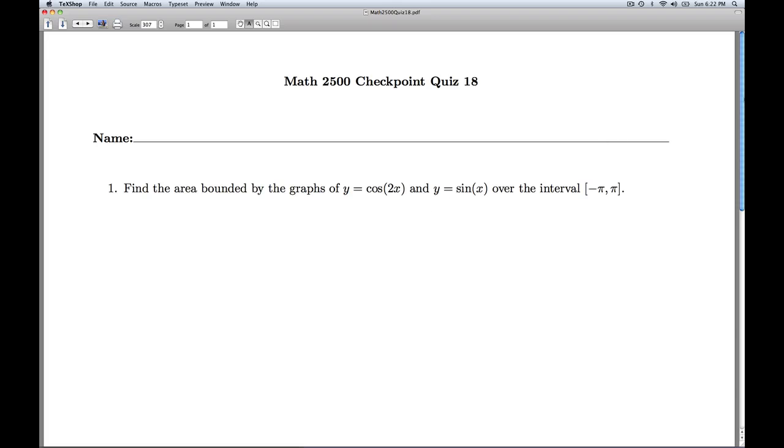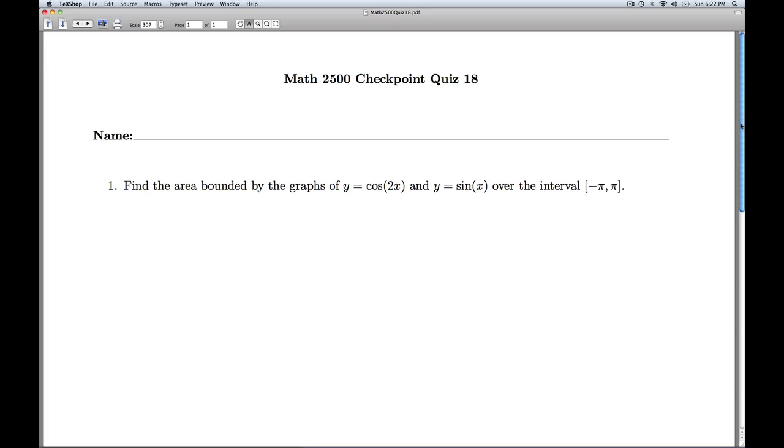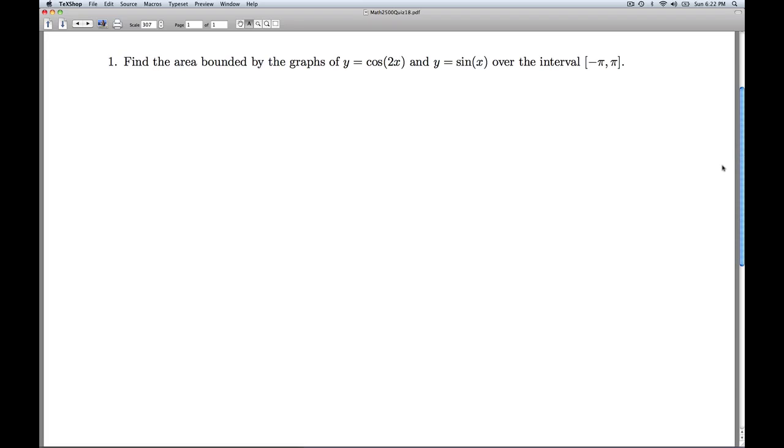Hi folks, this is Calc 1, quiz 18. We're asked to find the area bounded by the graphs of two functions, cosine 2x and sine x, on the interval minus pi to pi.